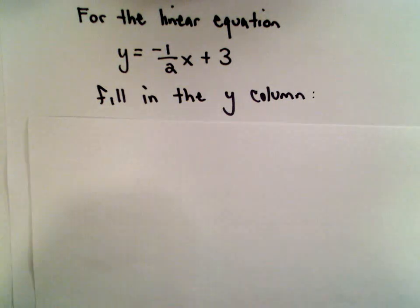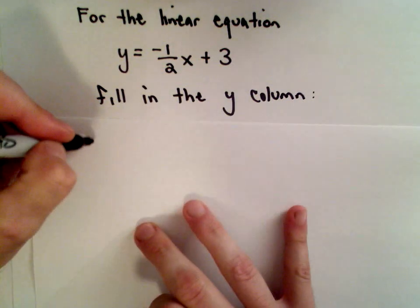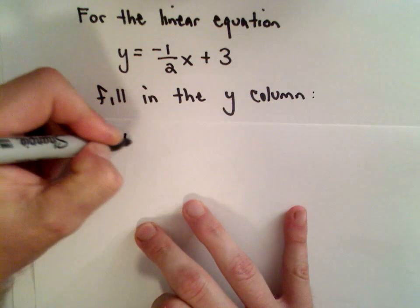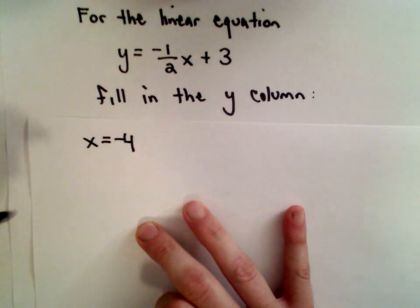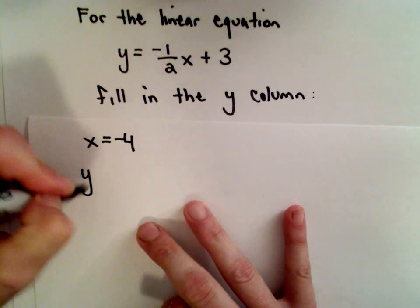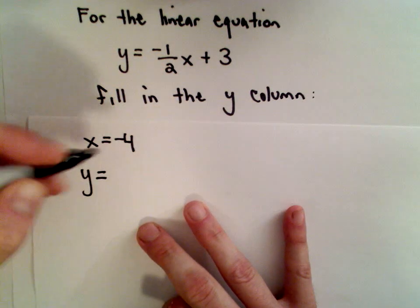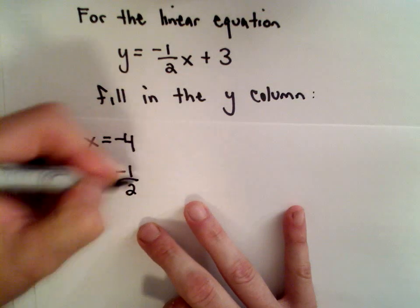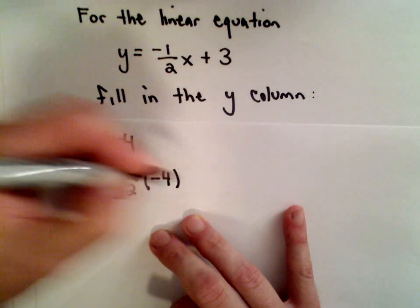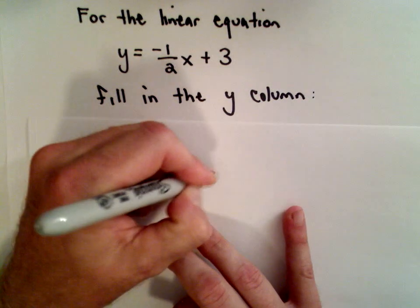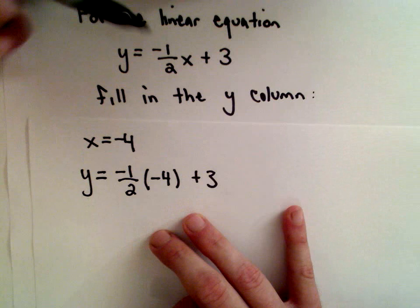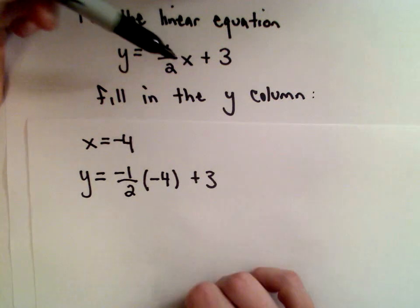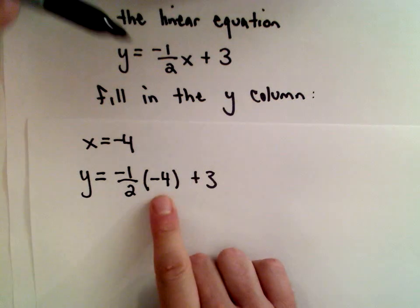So it's just a matter of doing a bit of substitution and some arithmetic. If x equals negative 4, we'll have y equals negative 1 half multiplied by negative 4 plus 3. I'm just replacing my x with negative 4 — that's all I've done here.